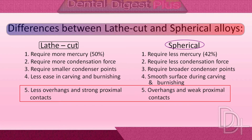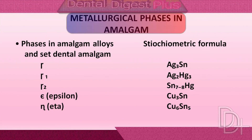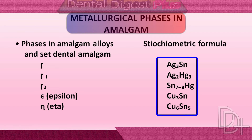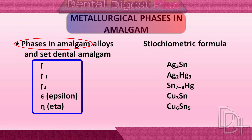Spherical alloy is weak in proximal areas compared to lath-cut alloys. Now, before understanding the amalgamation reaction, we need to remember all the metallurgical phases of amalgam. Depending on the composition of an alloy and the degree of solubility of the materials in each other, many intermetallic compounds are formed. These are termed as phases of amalgam. The symbols and stoichiometry of phases involved in the set dental amalgam are given here; these phases are named with Greek letters.